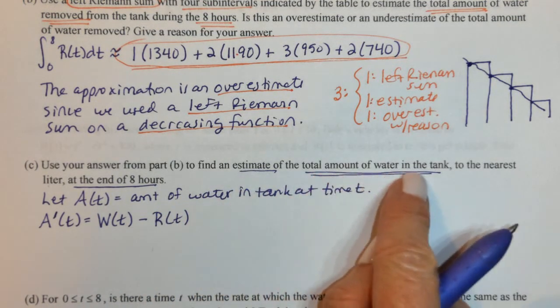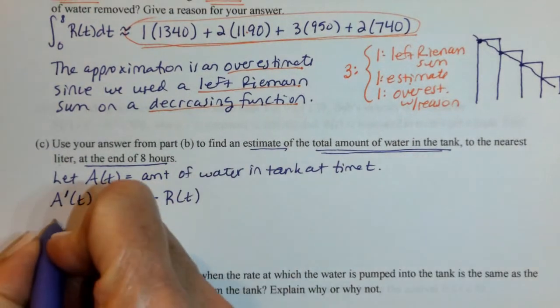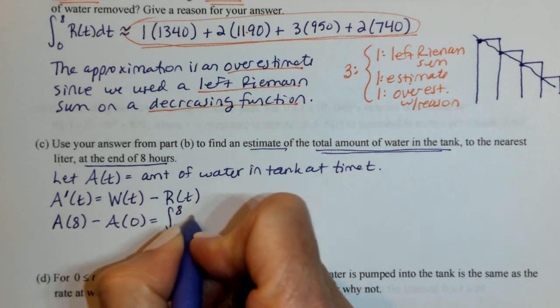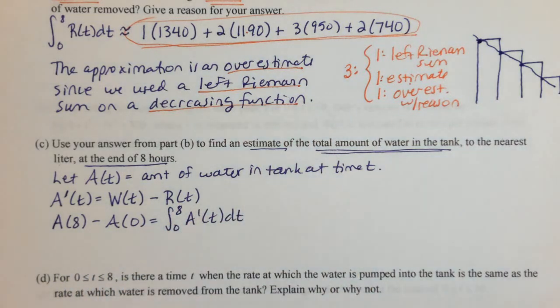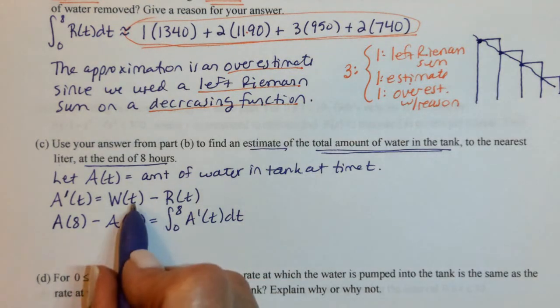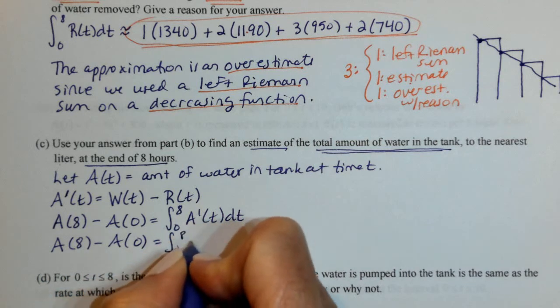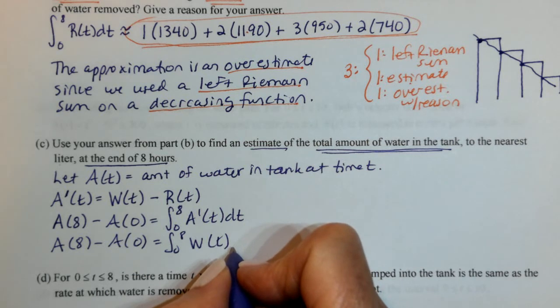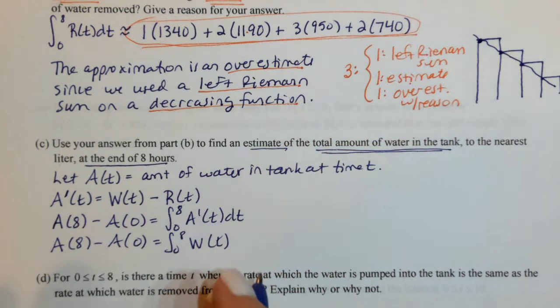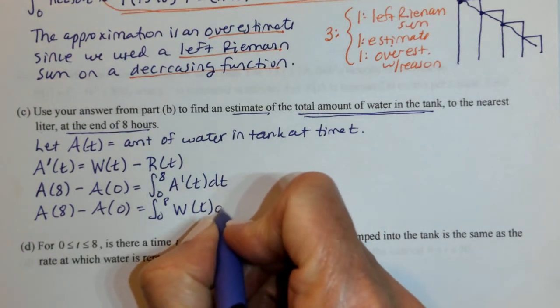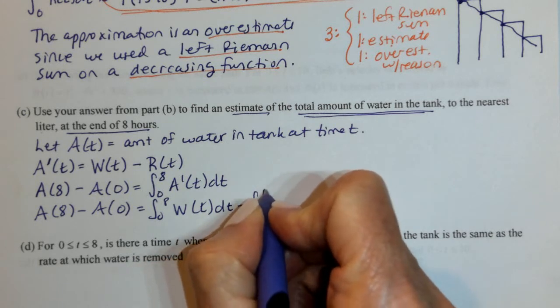By the Fundamental Theorem: A at 8 minus A at 0 equals the integral from 0 to 8 of A prime, which is W of T minus R of T. I need to split that integral since W is given as an equation and R is given as a table. So I split into two integrals.